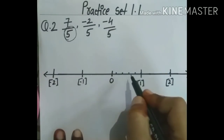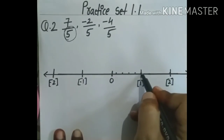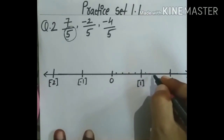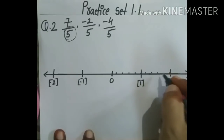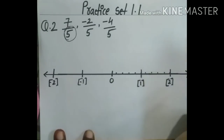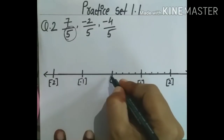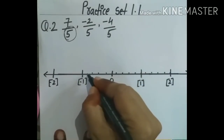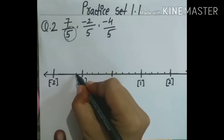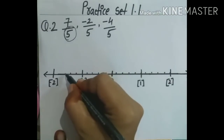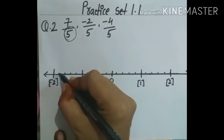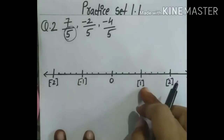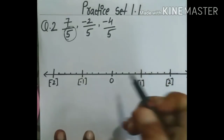The denominator is 5, so this distance of 1 unit we have to divide into 5 equal parts. Divide children into 5 parts: 1, 2, 3, 4, 5. Do the same for each unit on both right and left hand sides, dividing each unit into 5 equal parts.